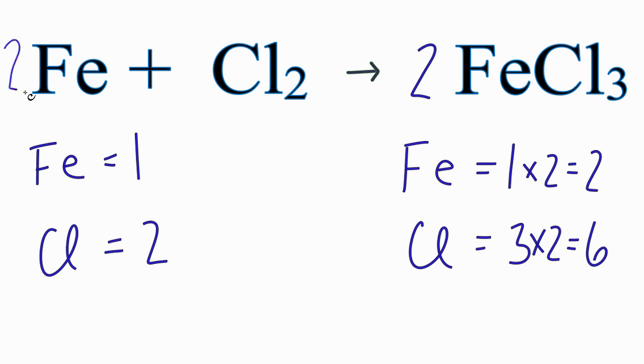I can just put a coefficient of two in front of the iron, and then one times the two, that will give me two irons, if those are balanced. And now I need to have six chlorine atoms, and I only have two. But I know,